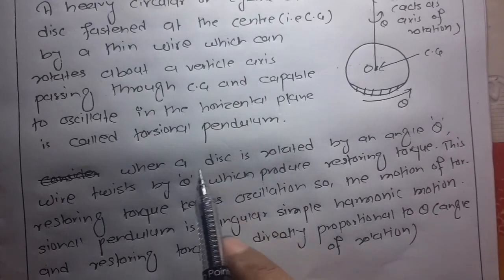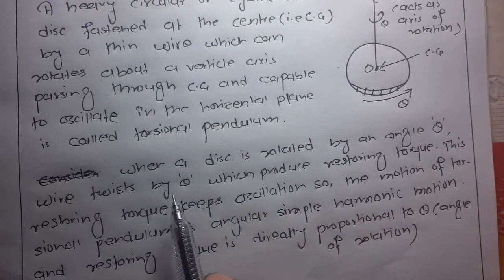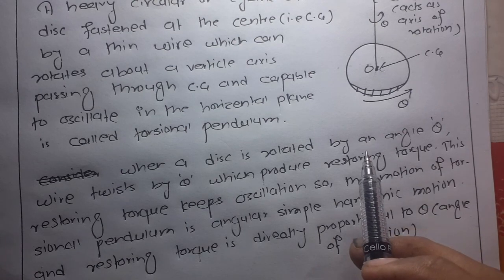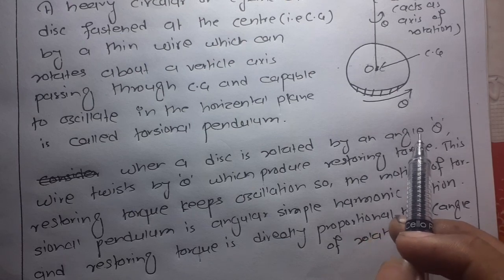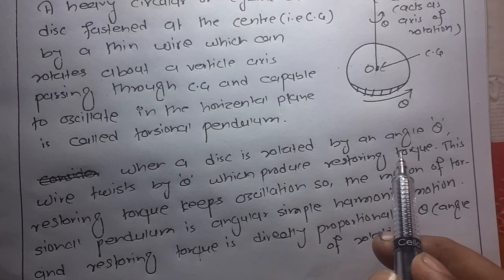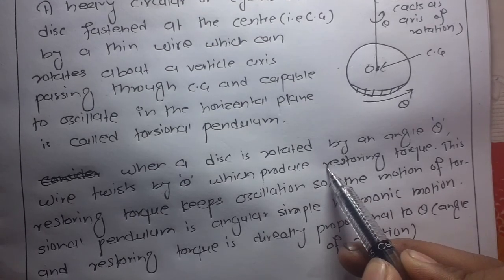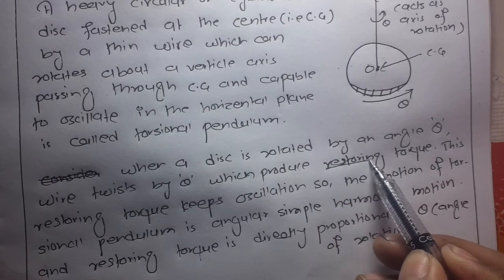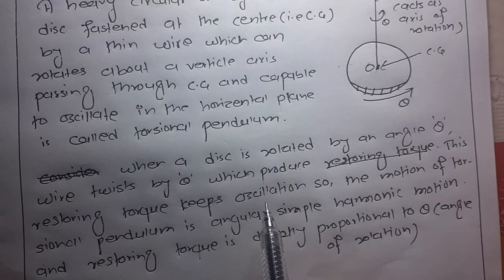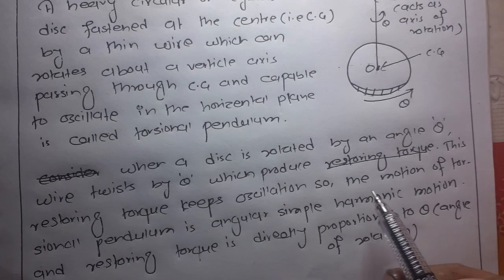When a disc is rotated by an angle theta, the wire is twisted by theta, which produces a restoring torque. This restoring torque gives oscillation to the circular disc.